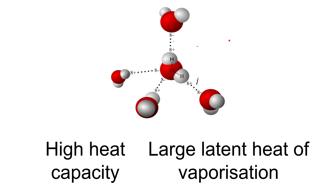There are a lot of molecules within organisms that need a set temperature in order to function, enzymes being the most obvious example. They have an optimum temperature — below that temperature they don't work very quickly and above that temperature they can start to denature. So it's important that the temperature within an organism remains constant. These hydrogen bonds mean that that happens since an organism is made mostly of water.